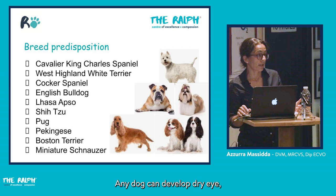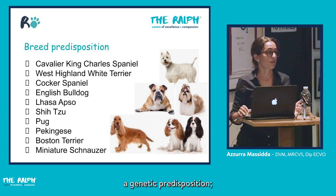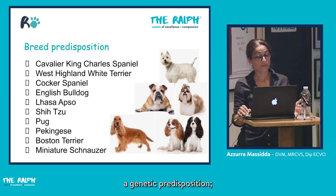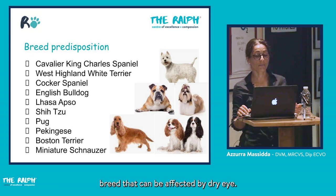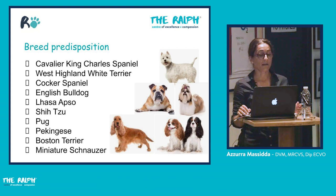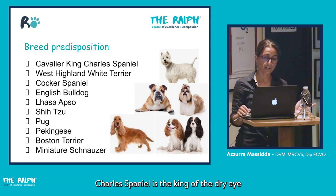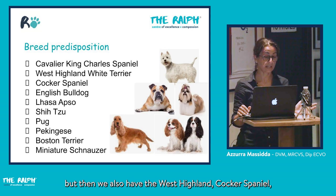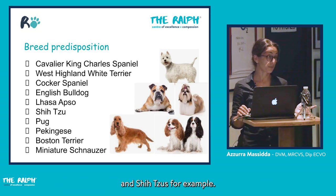Any dog can develop dry eye, but there is a genetic predisposition. The Cavalier King Charles Spaniel is the most commonly affected breed, but we also see it in the West Highland Terrier, Cocker Spaniel, English Bulldog, and Shih Tzu.